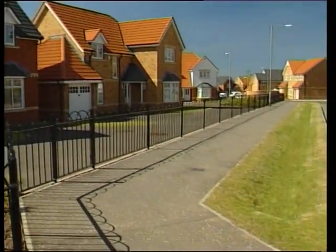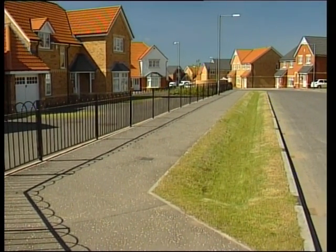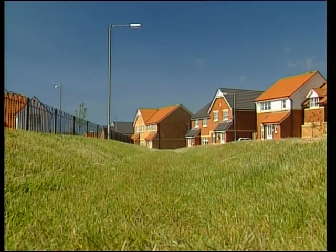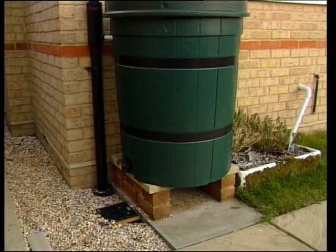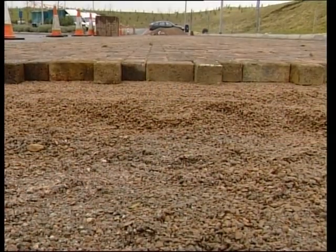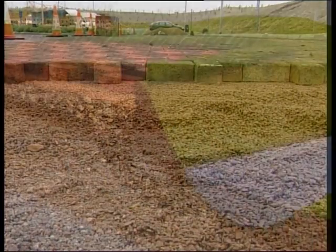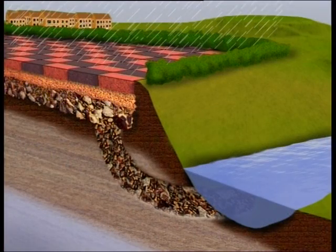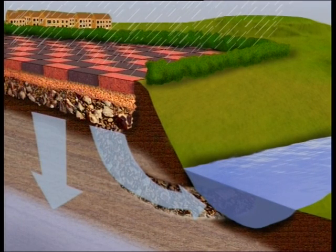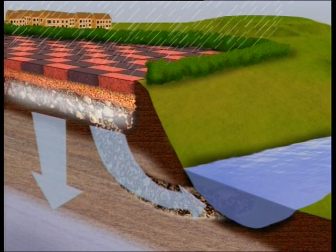Permeable surfaces are about as close to source control as you can get. These can be made simply from reinforced grass, graveled areas, or a variety of porous paving materials. Water flows through the surface into a permeable fill or sub-base where it can be stored, conveyed, or allowed to infiltrate the lower strata and recharge groundwater where there is no risk to its quality. The fill traps sediments and helps clean up the runoff.